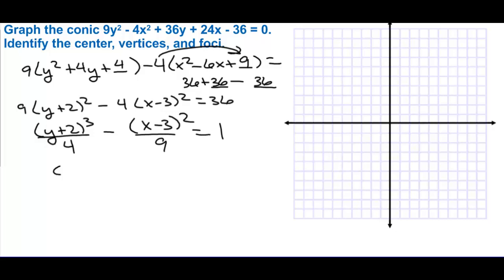Dividing by 36 gives (y plus 2) squared over 4 minus (x minus 3) squared over 9 equals 1. The center is (3, negative 2). We go up and down 2 units and right and left 3 units, then draw the rectangle.